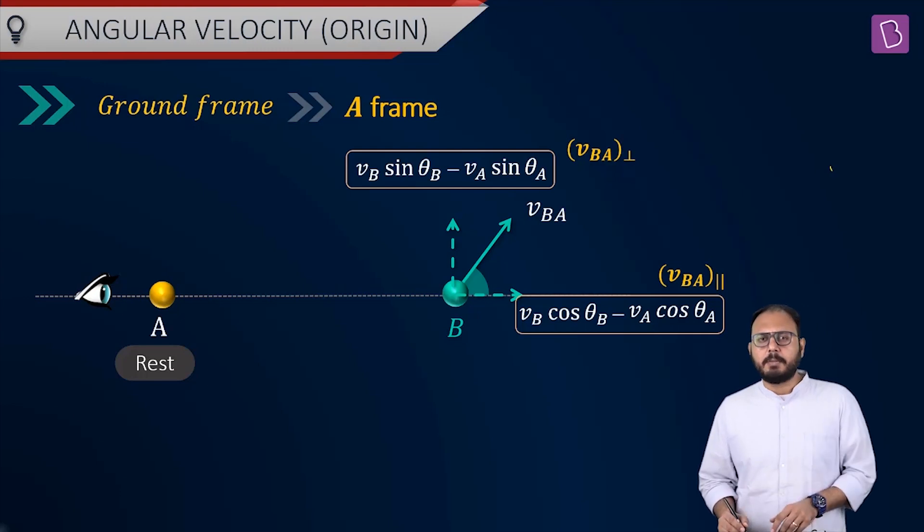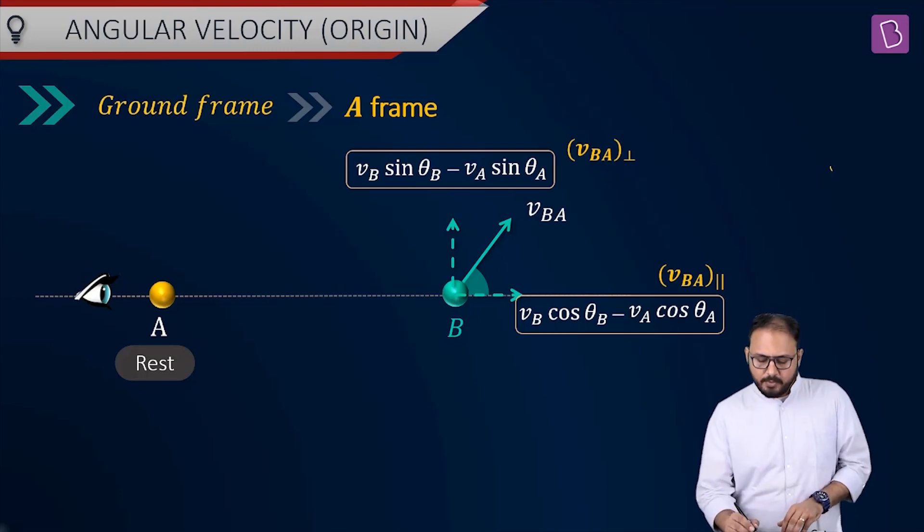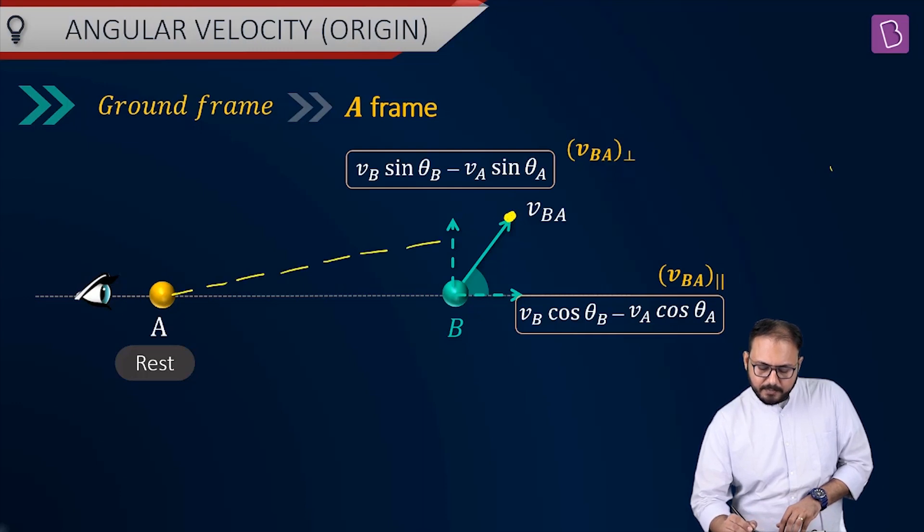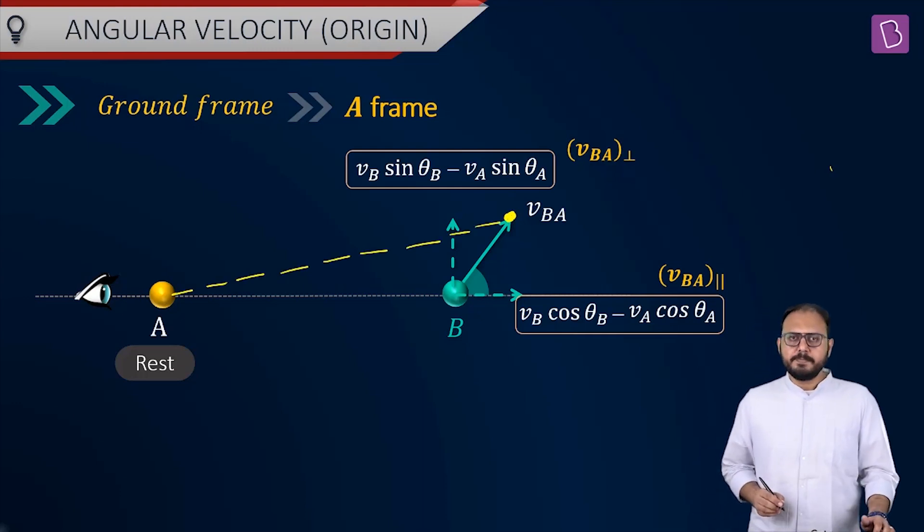Suppose after a fraction of time, fraction of time, dt time, where will this particle be? This particle B will be somewhere over here. That means, if I join A with B again, this will be the line joining them. Obviously, the separation might have increased and the angle has changed.